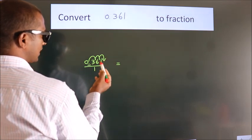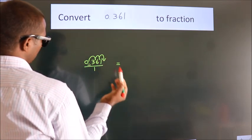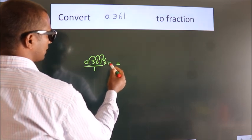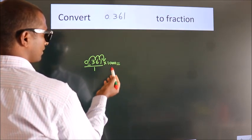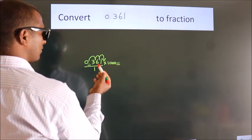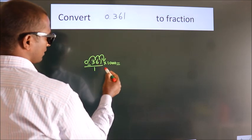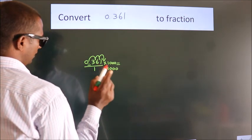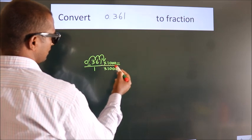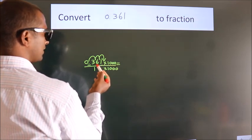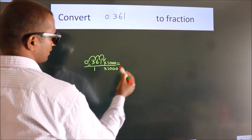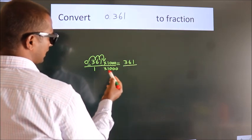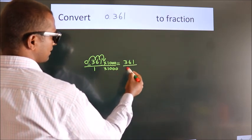To move this decimal after 3 numbers, we have to multiply it with 1000. Whatever you are multiplying in the numerator, do the same in the denominator also. So 0.361 into 1000 gives 361, and 1 into 1000 gives 1000.